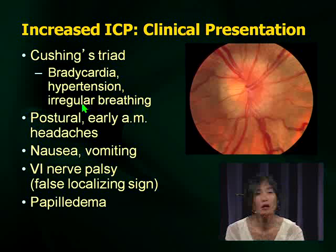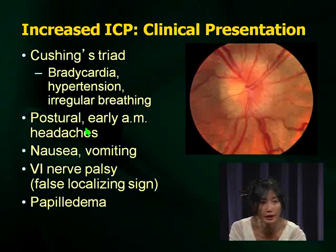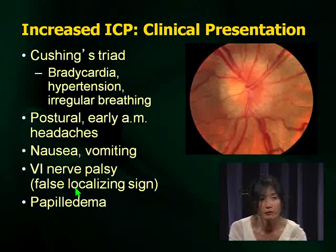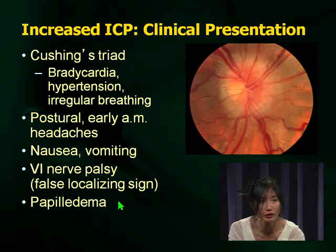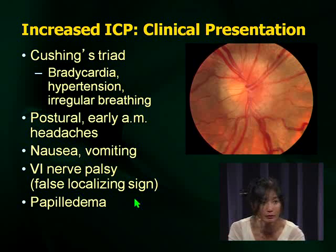What are the other more subtle signs? On a clinical scenario, you may get a child with postural headaches that feels better with lying down and early morning headaches. The other important physical examination sign is a sixth nerve palsy. Remember that sixth nerve palsy presents with diplopia. So the history may be a child presenting with diplopia and vomiting. That can be a sixth nerve palsy — a false localizing sign — meaning it is due to increased ICP, not a brainstem lesion.